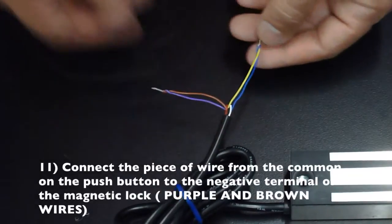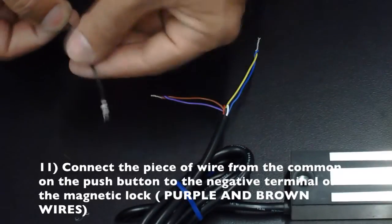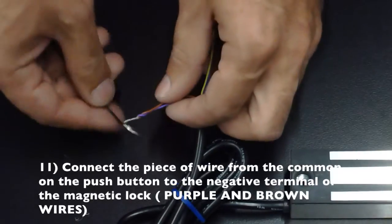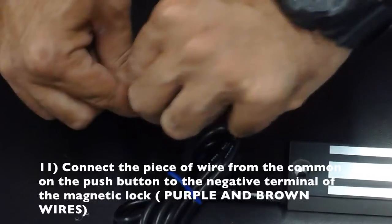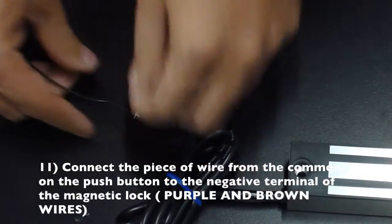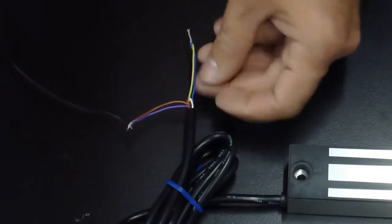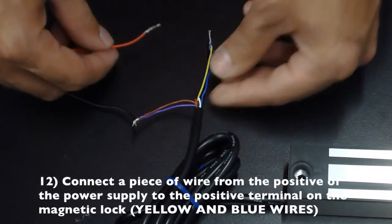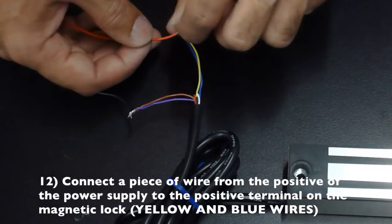Connect the piece of wire from the common on the push button to the negative terminal of the magnetic lock. Connect the piece of wire from the positive of the power supply to the positive terminal of the magnetic lock.